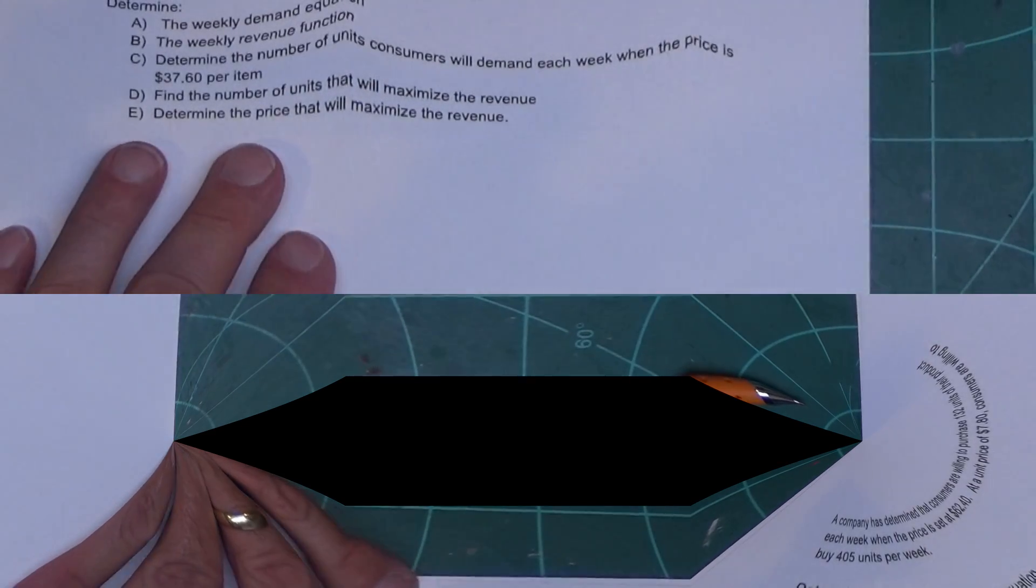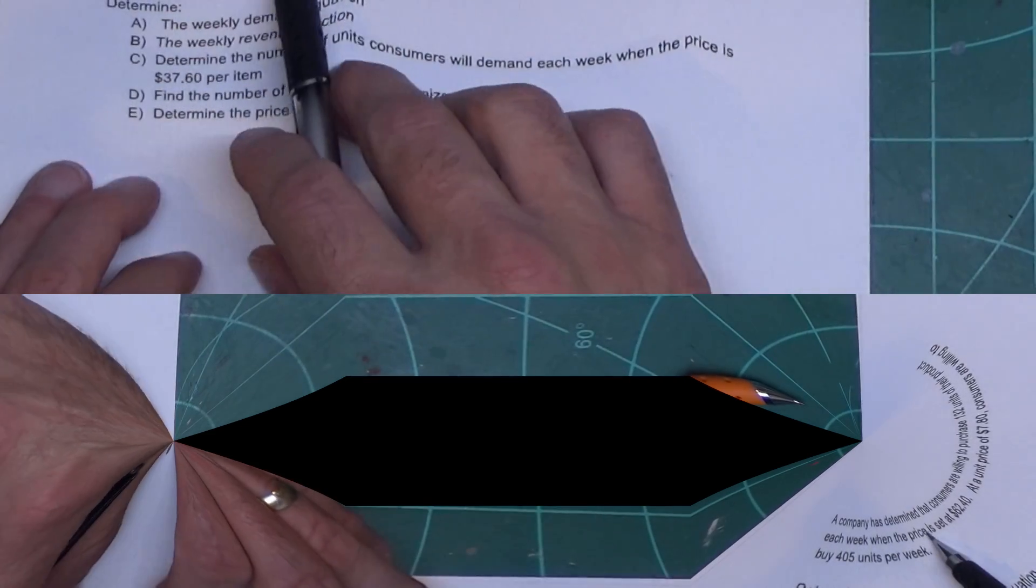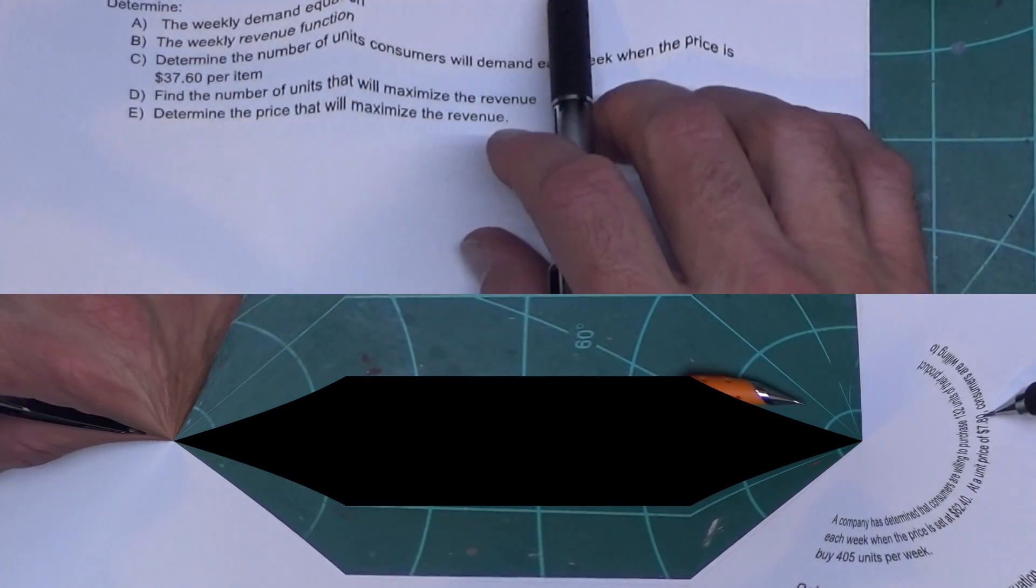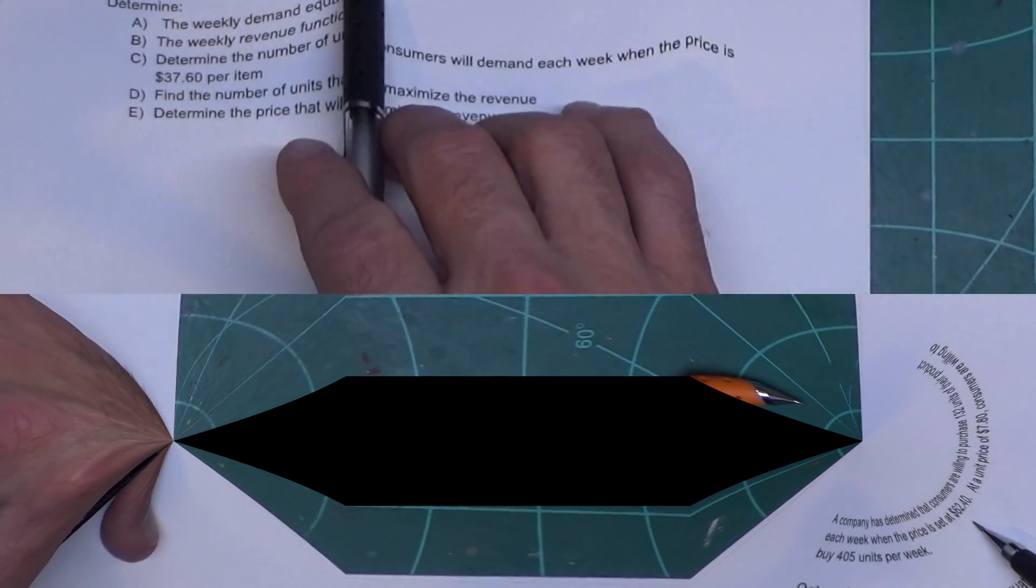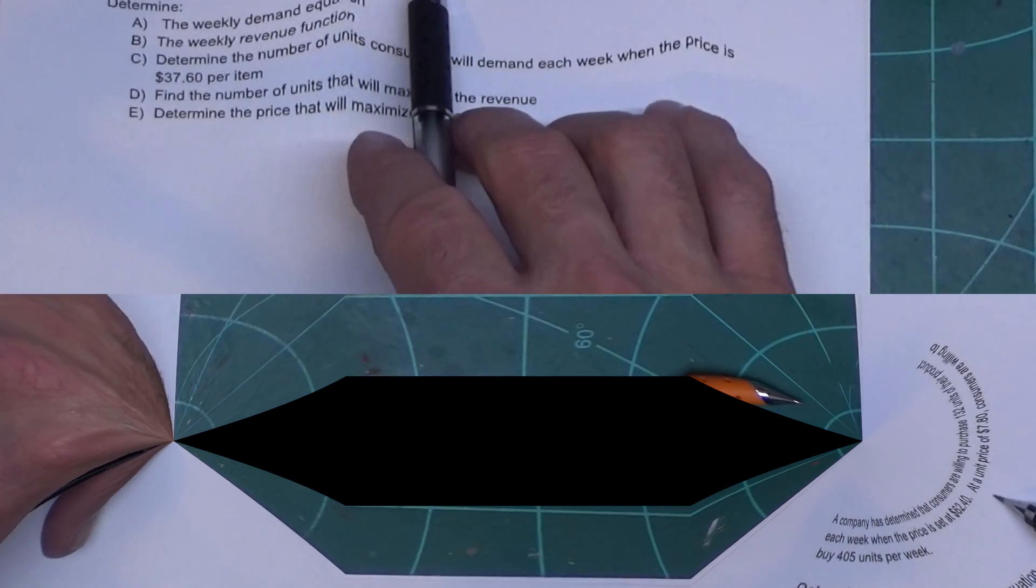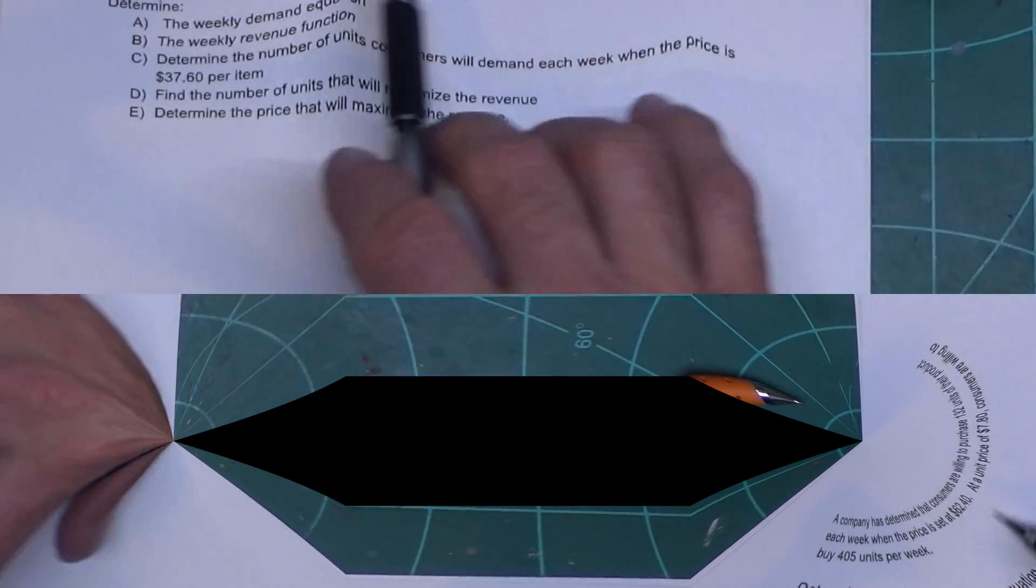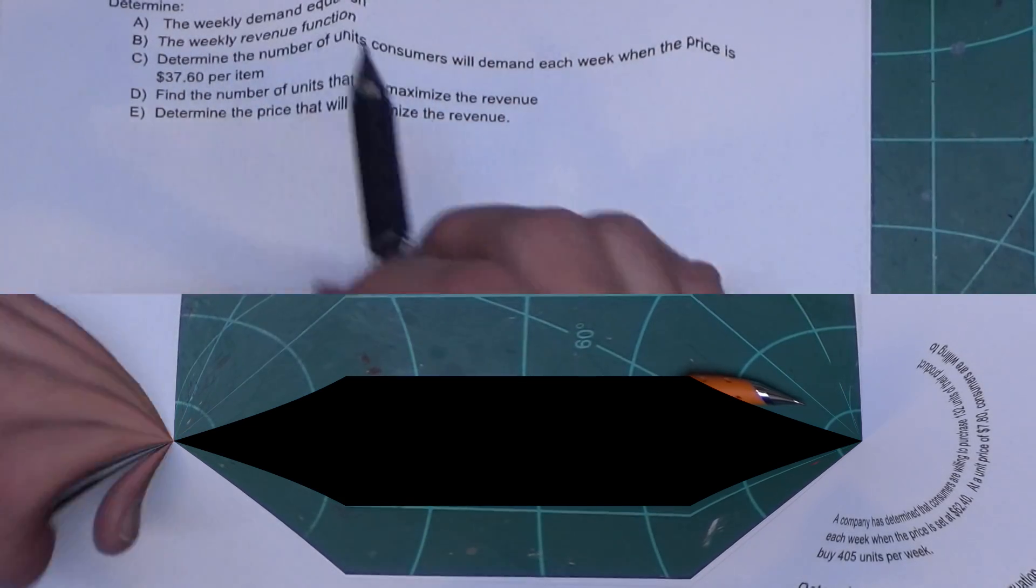But again, some people just love their algebra. This video isn't for you because I'm going to do as little algebra as I can. It says the company has determined that consumers are willing to purchase 132 units of their product each week when the price is set at $62.40 per unit. At a unit price of $7.80, consumers are willing to buy 405 units per week.